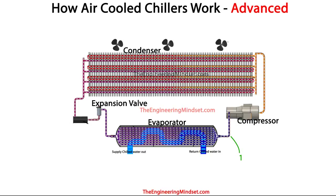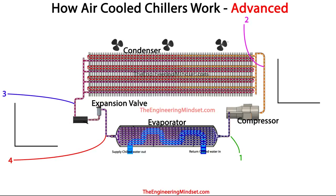Point one is just between the evaporator and the compressor — the properties of the refrigerant before it enters the compressor. Point two is just after the compressor and before the refrigerant enters the condenser. Point three is just after the condenser and just before the expansion valve. Point four is just after the expansion valve and before the evaporator. We're going to plot these on a graph: the vertical axis will be temperature on one graph and pressure on the other. The temperature graph has entropy along the horizontal axis, the pressure graph has enthalpy along the horizontal axis, and we'll also include saturation lines.